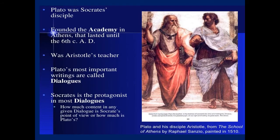Plato's background: he's one of Socrates' students. He founded the Academy, an early school, and he was Aristotle's teacher. On the right, you see a picture from the School of Athens. On the left, you see Plato — he's pointing up. And on the right, you see Aristotle, putting his hand down, saying it's here on Earth.